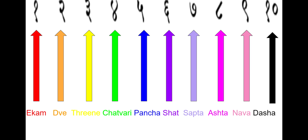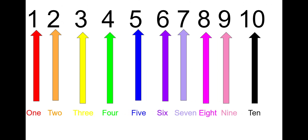Now after Sanskrit we're going to be doing English. The number is written on the top and spelled out on the bottom. So one, two, three, four, five, six, seven, eight, nine, ten.